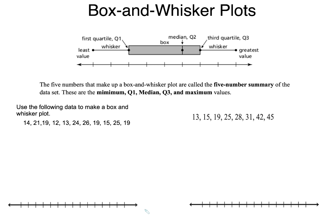A box and whisker plot displays your data along a number line using medians. The median is the middle value. With box and whisker plots, we always talk about the five-number summary in mathematics. That is your minimum, your Q1, your median — which is sometimes called Q2 — Q3, and your maximum values.